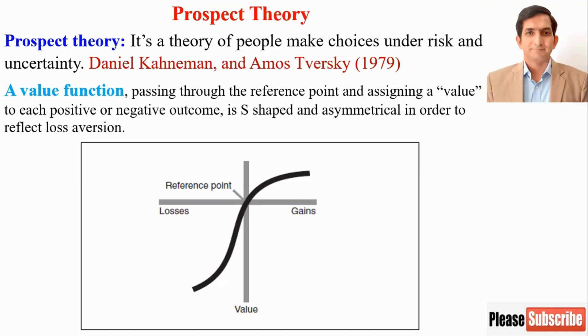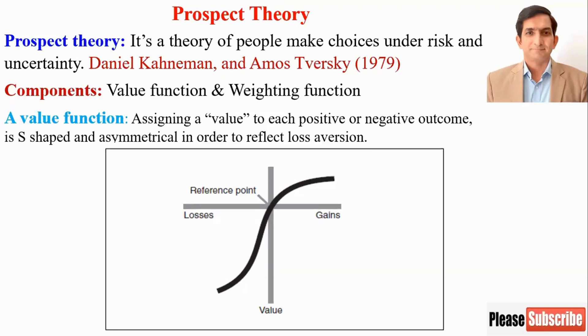They call it Prospect Theory because it's a theory about how people form decisions about prospects, and a prospect is a gamble. In other words, how people make decisions under uncertainty. This theory has two major components: value function and weighting function.